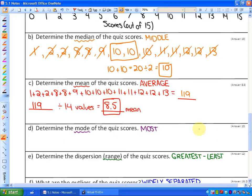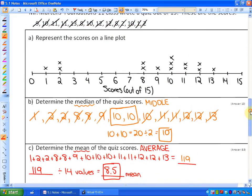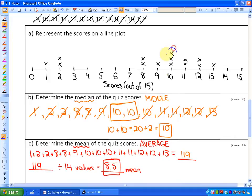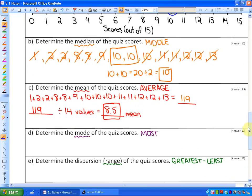Next, determine the mode of the quiz scores. This is really easy with a line plot. You can see the one that happens the most is the number ten, so my mode in this case would be ten. If two of them occurred three times, they would both be the mode.